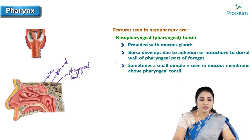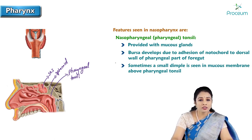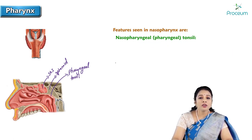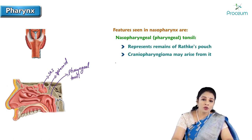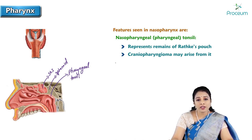This mucous diverticulum, which is the bursa, develops due to the adhesion of the notochord to the dorsal wall of the pharyngeal part of the foregut. During development, the notochord adheres to the dorsal wall of the pharyngeal part of the foregut, resulting in the formation of this bursa. Sometimes a simple dimple is seen in the mucous membrane above the pharyngeal tonsil.